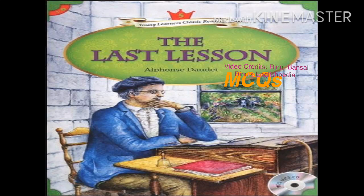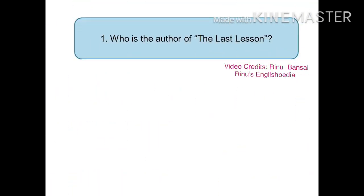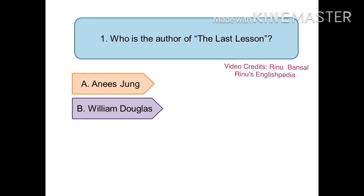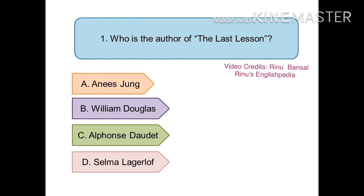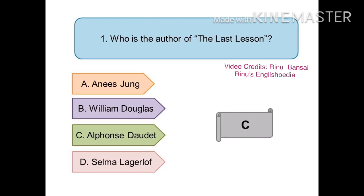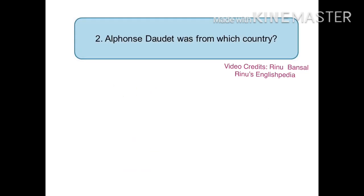Hello students, welcome to Reno's Englishpedia. Today we are going to do all the MCQs from the chapter 'The Last Lesson' in the book Flamingo. The first question is: who is the author of 'The Last Lesson'? The options are Anise Young, William Douglas, Alphonse Daudet, or Selma Lagerlöf. The right answer is Alphonse Daudet.